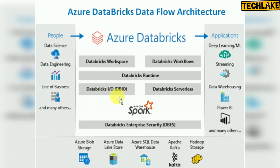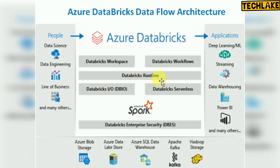Databricks IO covers input and output. DBFS is the Databricks File System where all your data transformations and results are stored. You can store data into Azure Blob Storage, Azure Data Lake Store (version one and version two), Azure SQL Warehouse, Kafka, or HDFS. There's also a newer option called Delta Lake, which provides features for identifying incremental data — called delta data.